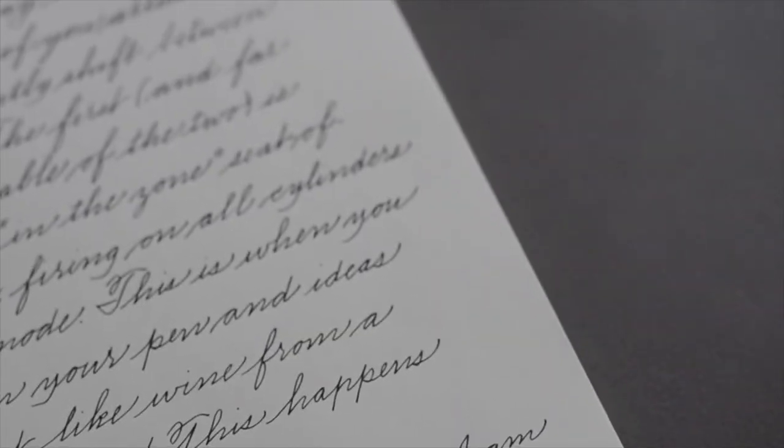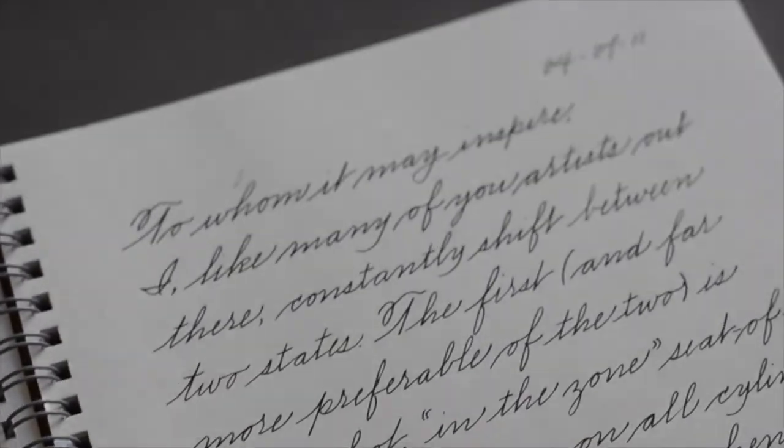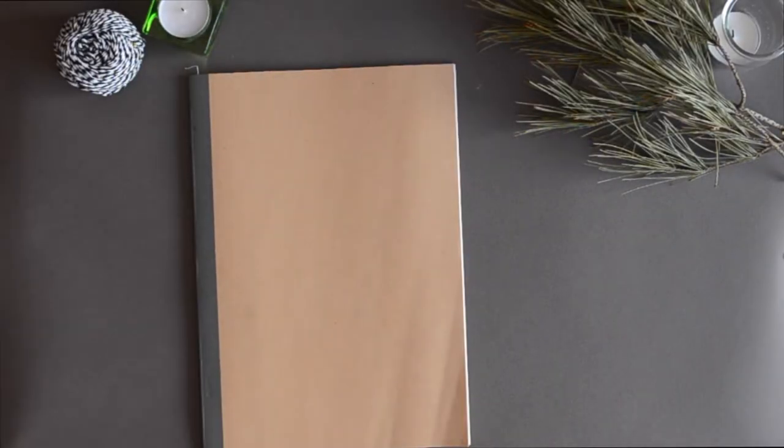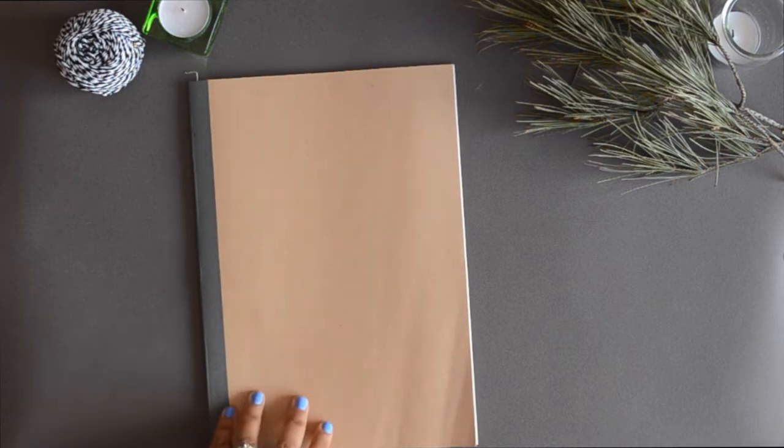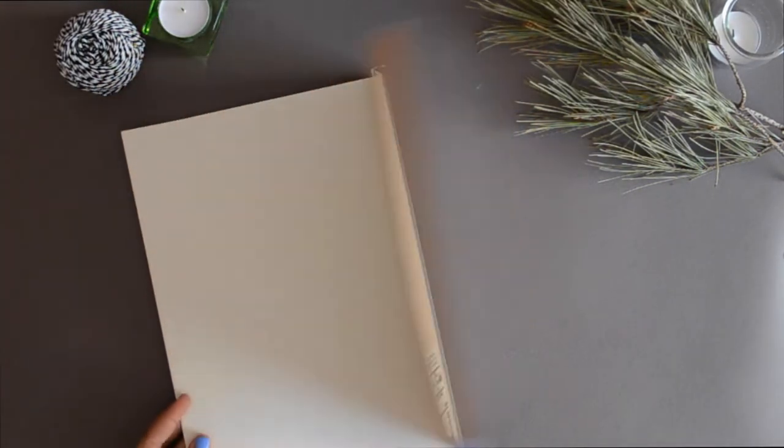The third one I like are these Muji notebooks. The paper is cream colored which I love. I love cream colored paper more than white or off-white paper. It's really smooth and they come in a bunch of different sizes. So this is a kind of smaller spiral bound one which lays flat. This one I like better. It's an A4 roughly size and the pages come lined.